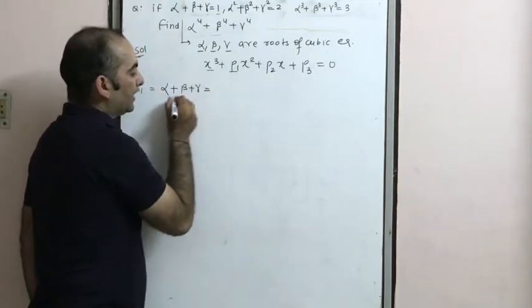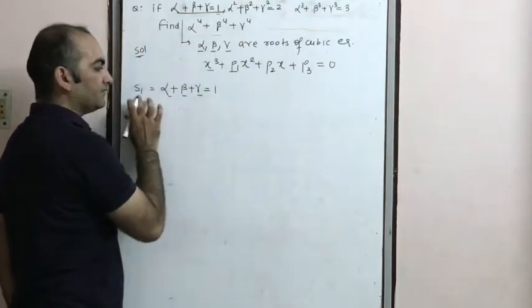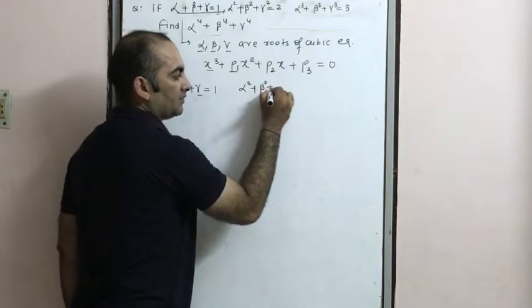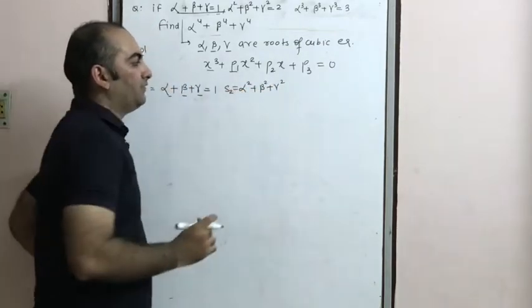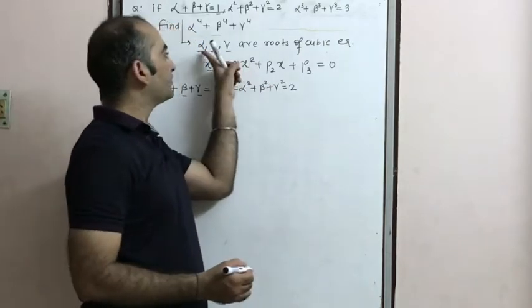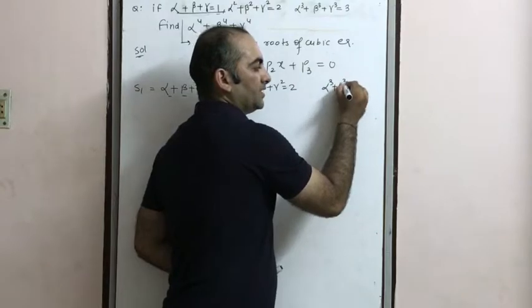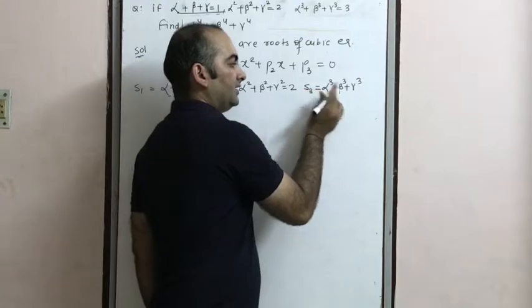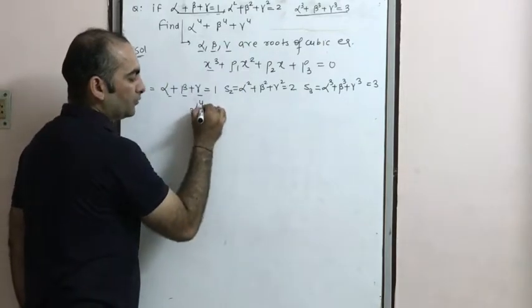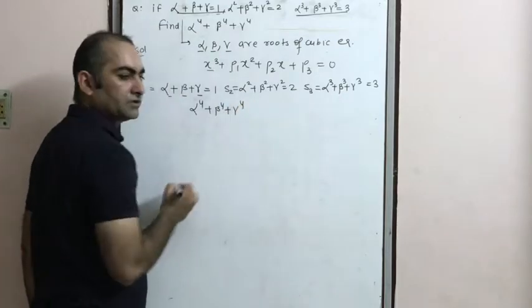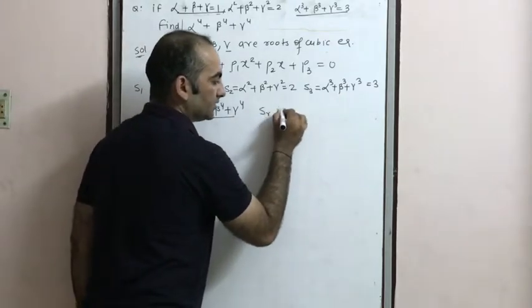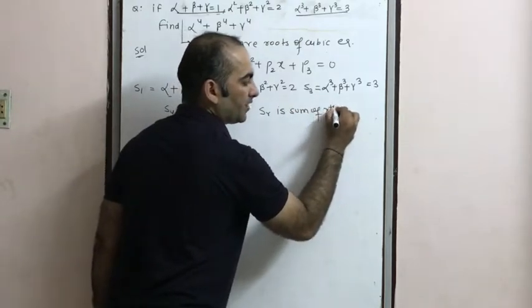S1 = α+β+γ = 1. Similarly, S2 = α²+β²+γ² = 2. S3 = α³+β³+γ³ = 3. We need to find S4 = α⁴+β⁴+γ⁴, where Sr denotes the sum of the rth powers of the roots.